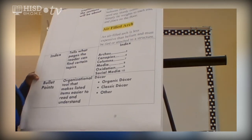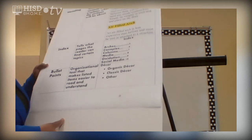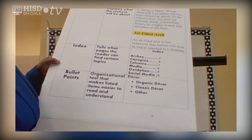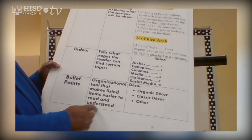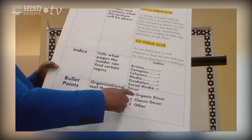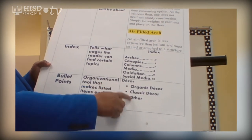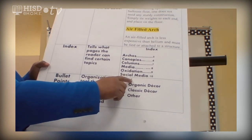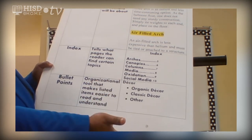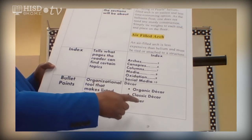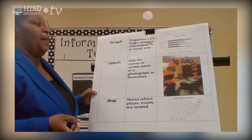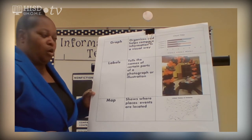And bullet points — I love using bullet points when I write and for note taking. They are an organizational tool that makes listed items easier to read and understand. As you can see, this section is about decor, and the bullet points list different types of decor: organic, classic, and others.